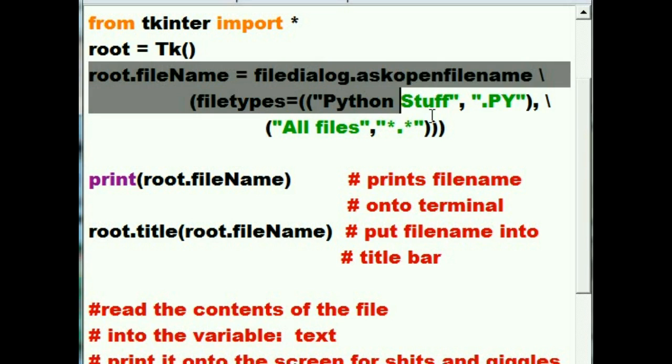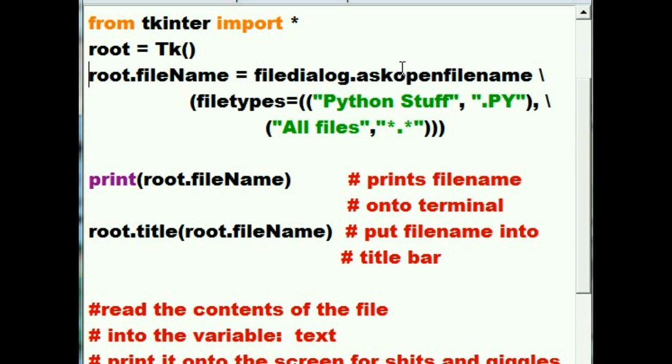Next thing I'm going to do is this thing right here. I'm going to say Mr. FileDialog. He says, yeah, what can I do for you? I want you to go grab one of those ask me to open up a file named dialogs. Display that on the screen. And the file types that I want you to display are Python stuff, which means .py files and all file stuff, which are star.star files. And what I want you to do is that when a user clicks on the target file and open, I want you to assign that file name to root's file name attribute.